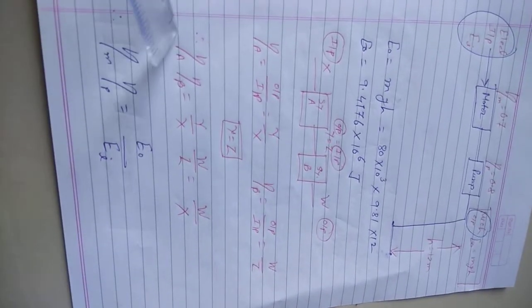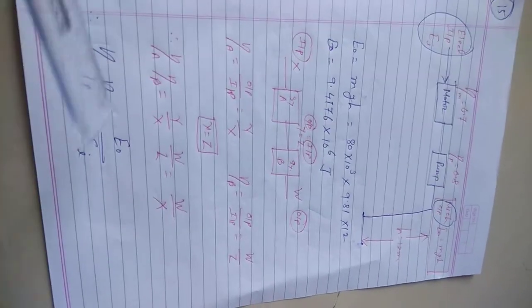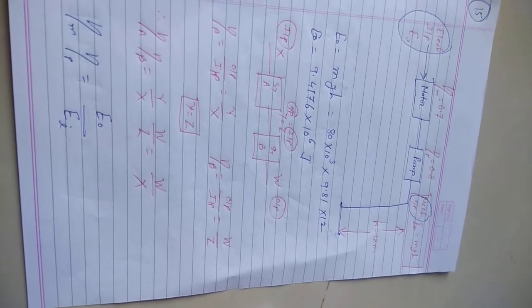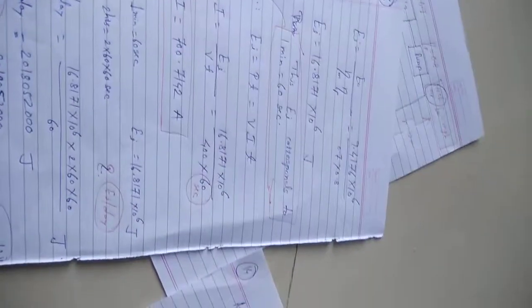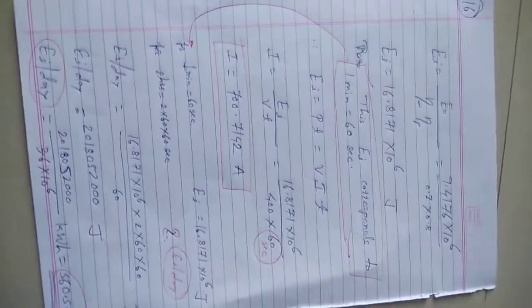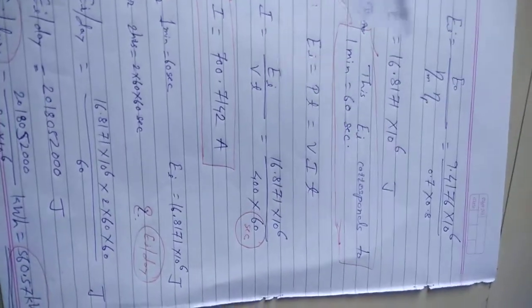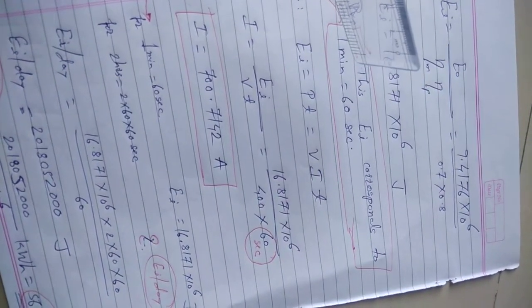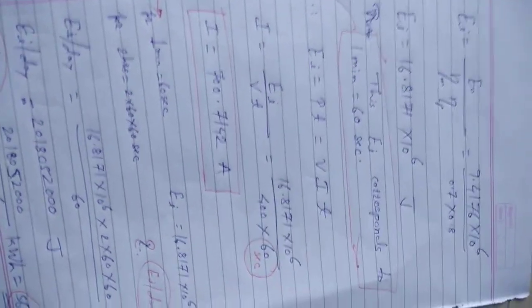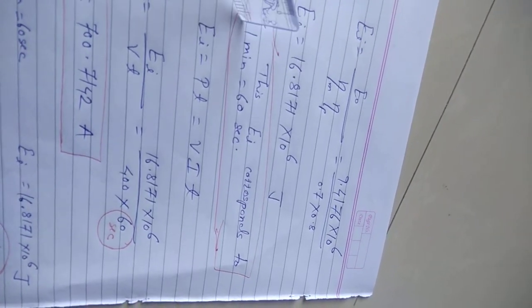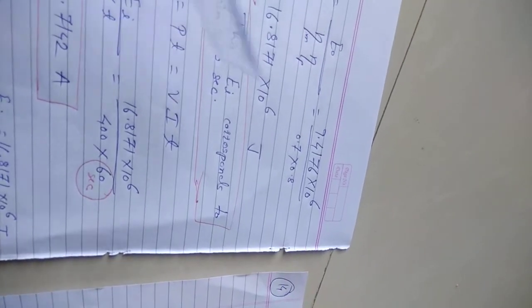Using the efficiency formula — product of motor and pump efficiency equals E0 by Ei — we can calculate the input energy Ei in joules, since E0 was already calculated in joules. The pump lifts 80 cubic meters of water per minute, meaning this energy is consumed in one minute, which equals 60 seconds.